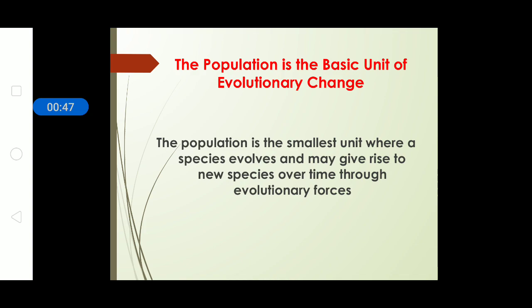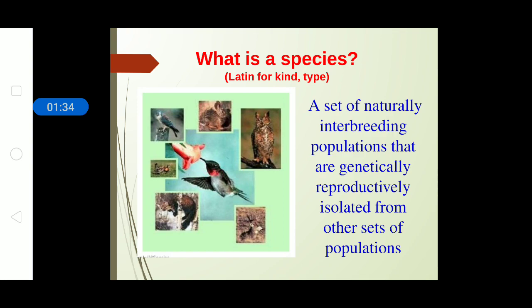Consider an example: there is a grassland where, due to some volcanic activity or earthquake, the land has been separated into two parts with a river running between them. Because of the river, the herbivores present in the grasslands cannot migrate from one side to the other. Over 100 to 150 years, both groups of animals will evolve separately based on available conditions and resources. This leads to speciation.